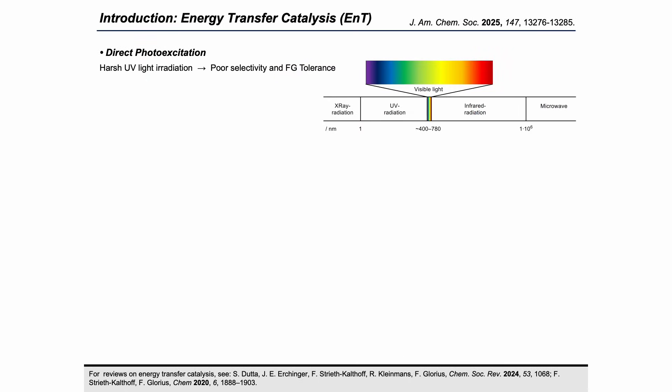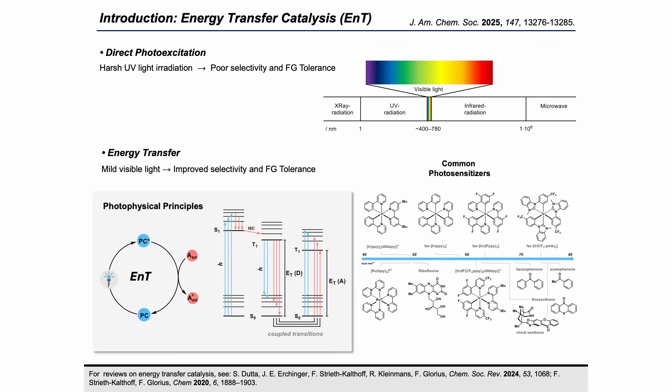First thing you need to know when working in this field is that you could use different sources of light for irradiating organic molecules. One option is direct photo excitation, but in order to do so you need to rely on harsh UV light, and since UV light is highly energetic, your selectivity and functional group tolerance could be affected. Another option is exploiting light in the visible region — since it's less energetic, your selectivity and functional group tolerance is improved, but you need a photosensitizer.